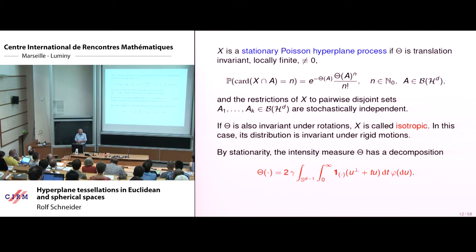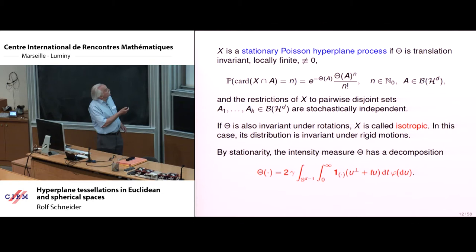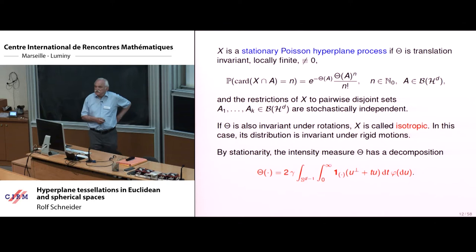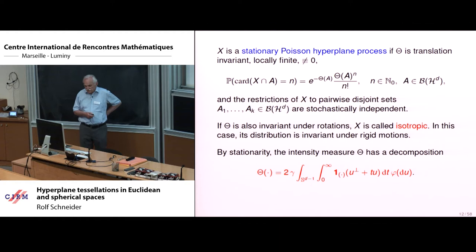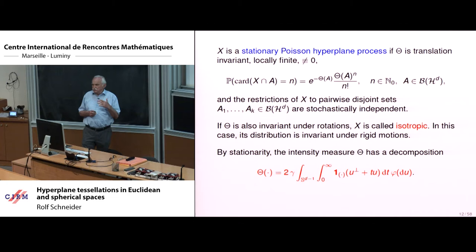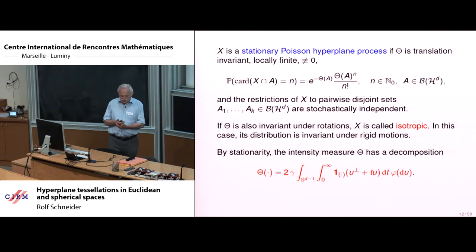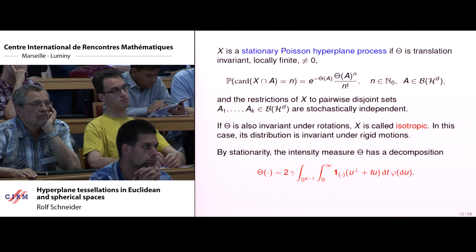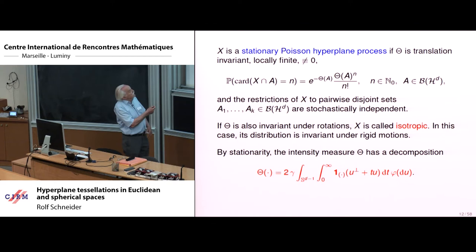Usually it is part of the definition that the restrictions of X to pairwise disjoint sets are stochastically independent. For simple processes this would follow, but I repeat it because these independence properties are very important in the following. If the intensity measure is also invariant under rotations, then we say the process is isotropic and then the whole distribution is invariant under rigid motions. The distribution properties of the directions of the hyperplanes in the process play an essential role from the geometric point of view.